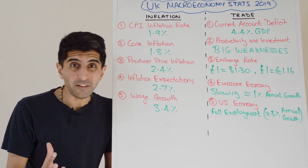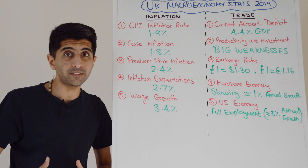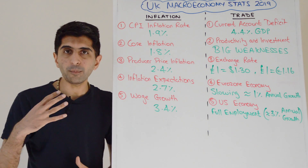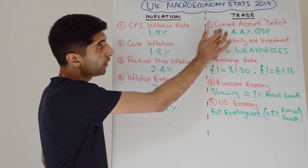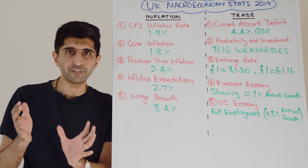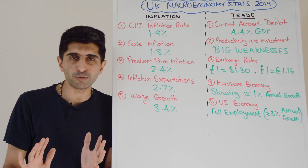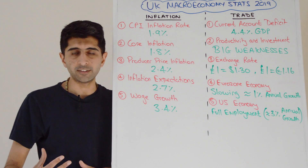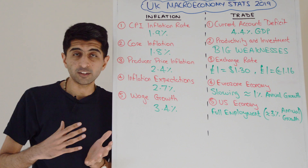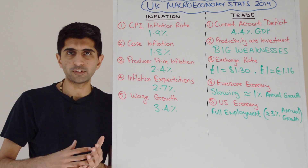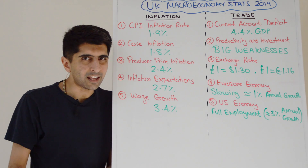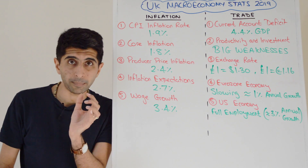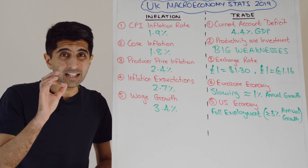The UK's current account deficit is quite large at 4.4% of GDP. Interestingly, the weak pound has done absolutely nothing to help — since Brexit the deficit has hovered between 3% and 5% with no long-term sustained improvement. High incomes are one reason, as rising real incomes suck in more imports, but the underlying reason is structural issues in the UK economy — supply-side issues with productivity and investment.